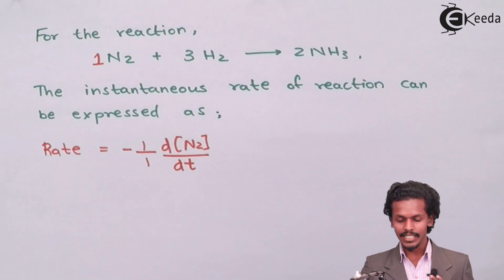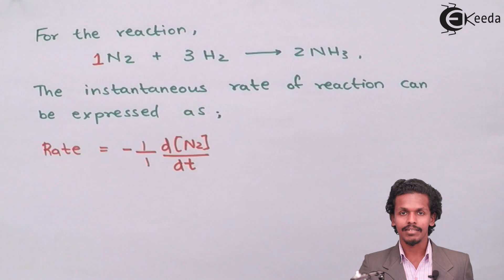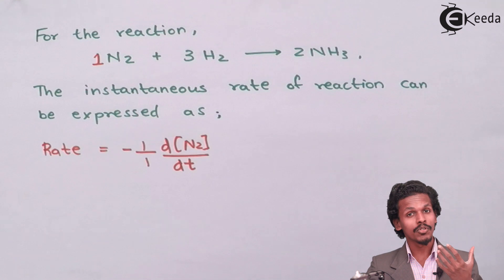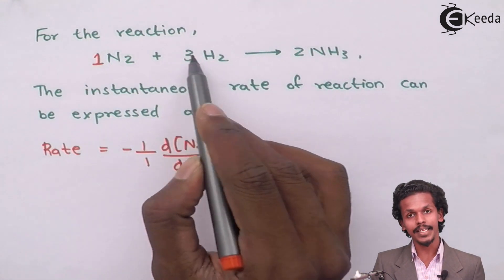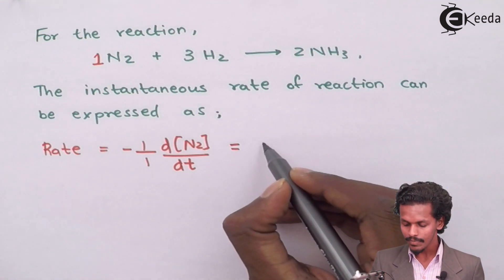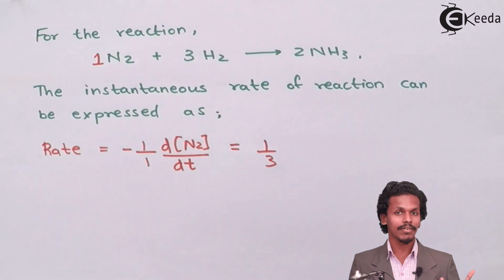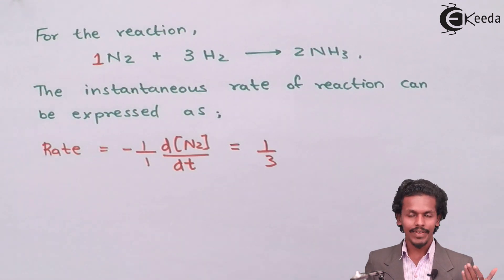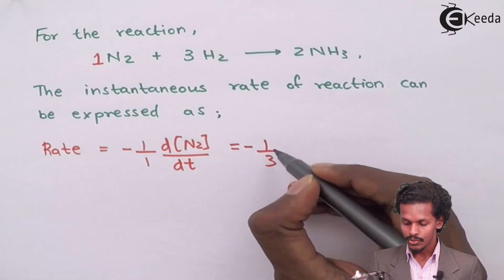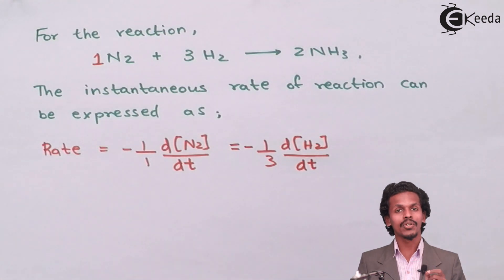For the other reactant H₂, with stoichiometry 3, we write it in reciprocal form as 1/3. Since H₂ is also a reactant, its concentration goes on decreasing, giving it a negative sign. So: rate = −(1/3) × d[H₂]/dt.